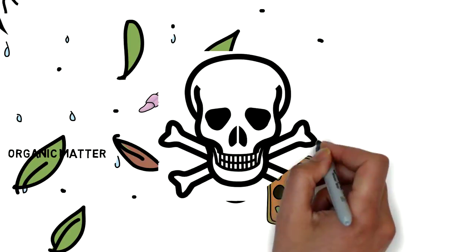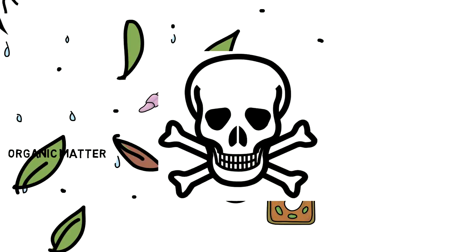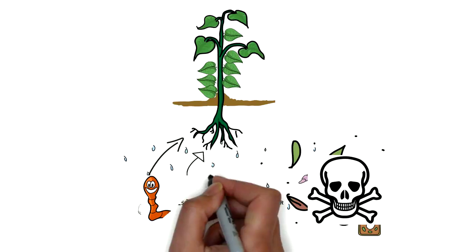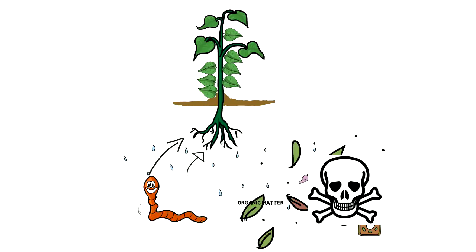When you use synthetic conventional fertilizers and pesticides, it kills all the beneficial organisms in the soil that are able to release these nutrients, which is why you have to continually spoon feed your plants when you're using chemical fertilizers. The goal of true sustainable agriculture is to stimulate the living organisms to release those nutrients, which is really nature's true fertilizer.